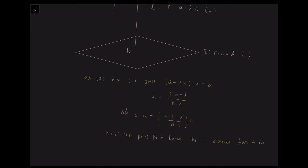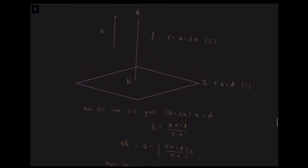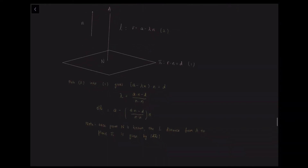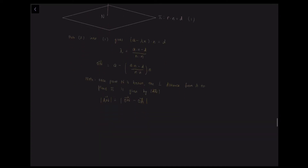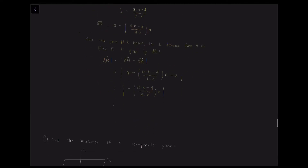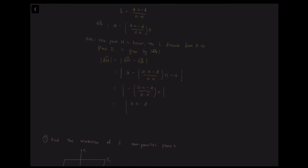Once point N is known, the perpendicular distance of point A from plane π is given by the modulus of vector AN. So AN = ON − OA, and substituting ON = a − ((a · n − d) / (n · n))n − a. Since the a terms cancel, we get AN = −((a · n − d) / (n · n))n. Using the identity n · n = |n|², the modulus of n cancels and we obtain the simplified formula: |AN| = |a · n − d| / |n|, which is the formula for perpendicular distance of a point from a plane.